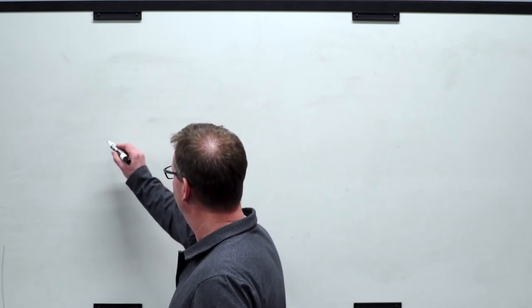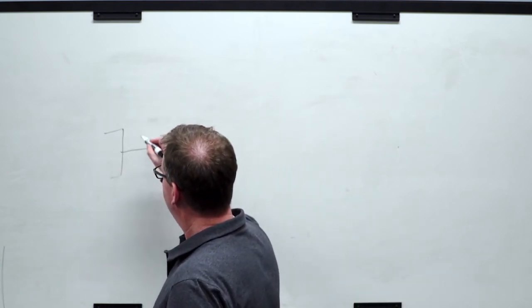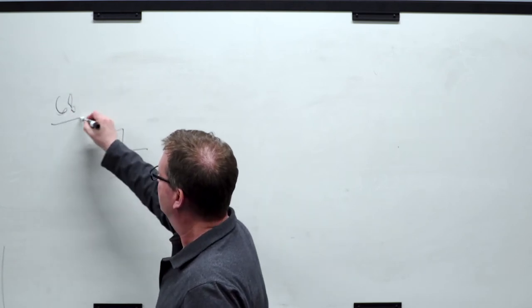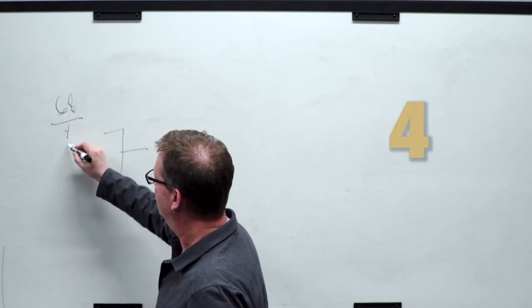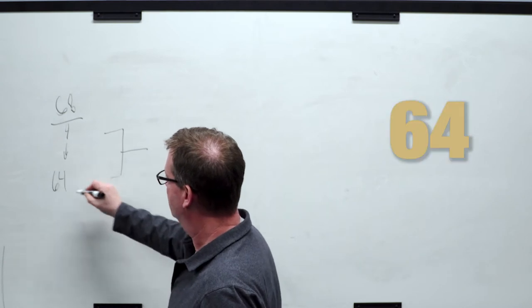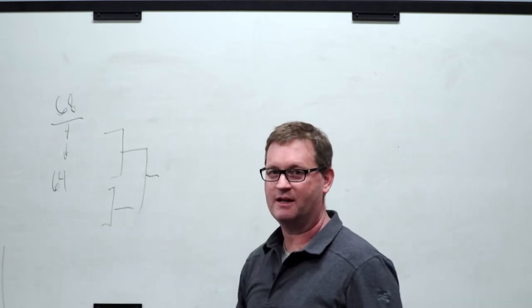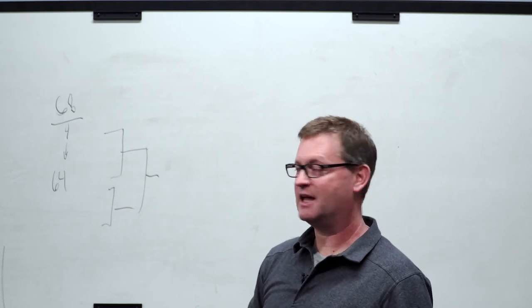So the bracket refers to 68 teams who are invited to the NCAA tournament. Four teams play a play-in that leaves us 64, and they're put into a big national bracket that people spend a lot of time picking their games.